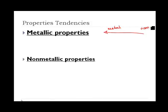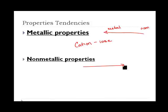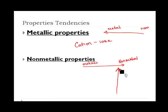Some of the things that metallic properties are based on is the ability to lose electrons or become a cation — an atom that loses electrons. Non-metallic properties tend to increase as we move to the right on the periodic table, which again makes sense because we have metals on the left and non-metals on the right. They also increase as we move up the periodic table. This is based on the ability to gain electrons or to become an anion.